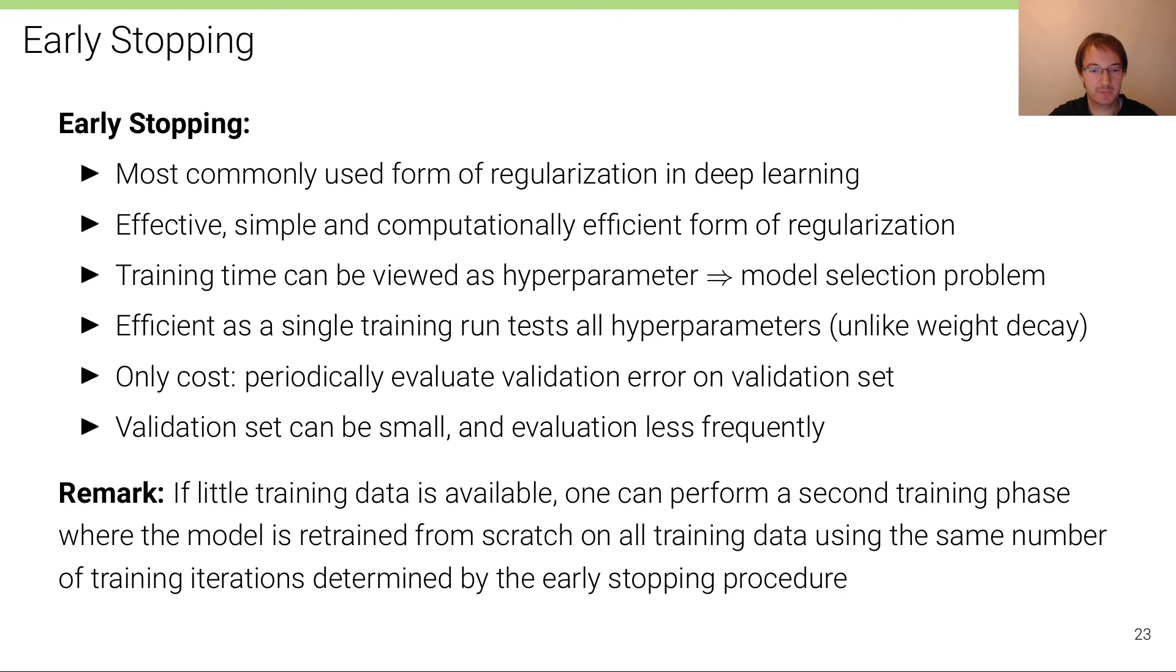A little remark: if little training data is available, one can perform a second training phase to take advantage of this held-out validation set. What we would do then is basically do a first run to see how many steps are needed, how many iterations or how many epochs are needed, and then run a second training phase from scratch again where we initialize the parameters from scratch, where the model is then retrained on all the training data including the validation set, using the same number of training iterations determined by the early stopping procedure. Of course, then we have to conduct two training runs, and this is only worth it if we really have little data so that this validation data is actually needed to get good performance on the benchmark that we consider.